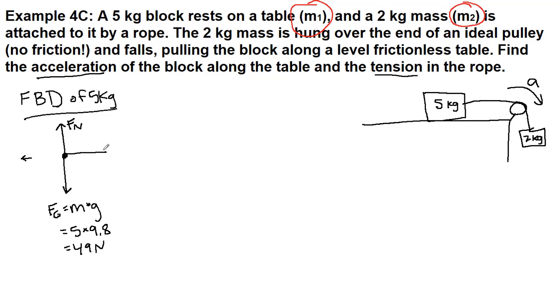The tension in the rope, we will call FT, or you can call it capital T, either one. It points where the rope is attached, because ropes always pull. So for the free body diagram of the 5 kilogram mass, we see these three forces, and the acceleration for that particular mass is to the right, and that is going to be our positive direction.